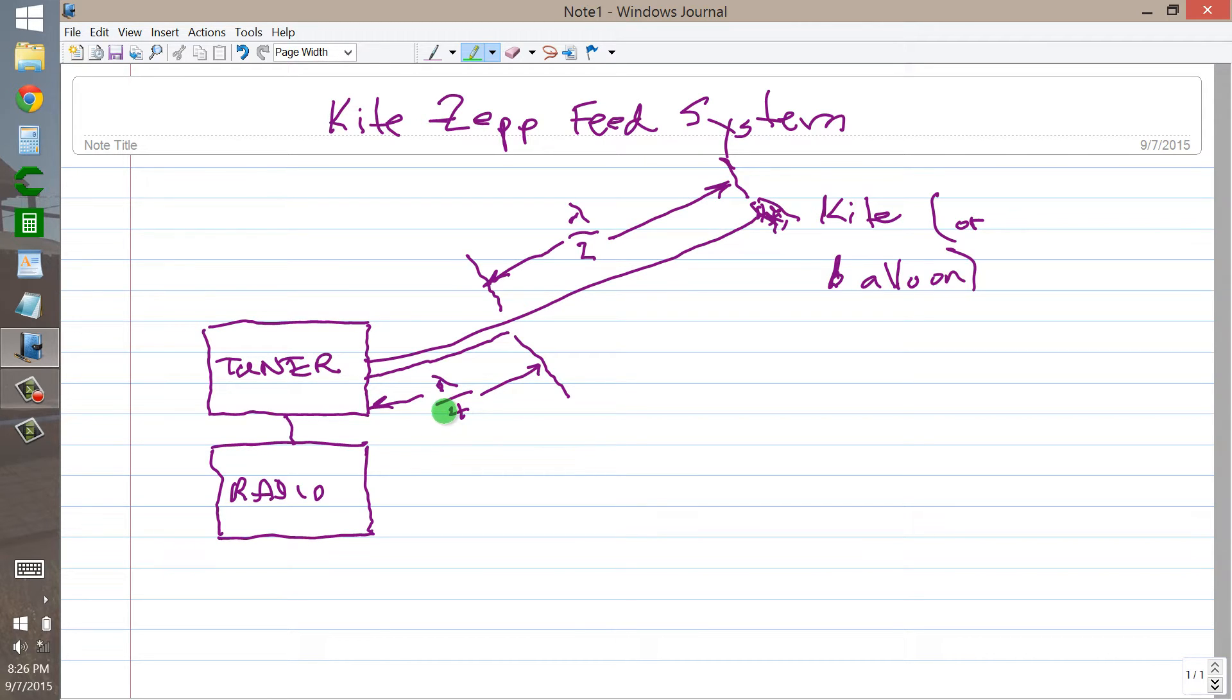Well, the answer would have to be yes and no. First of all, the feed line in a Zep antenna is going to radiate inherently to some extent anyway, because it is not a truly balanced antenna...